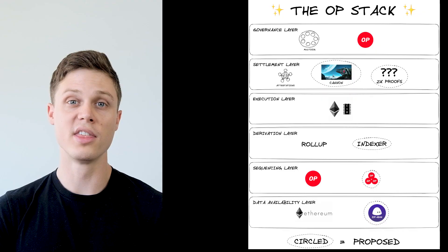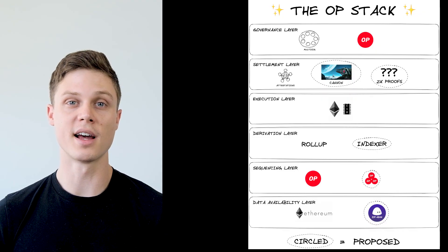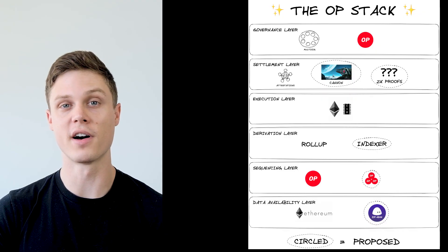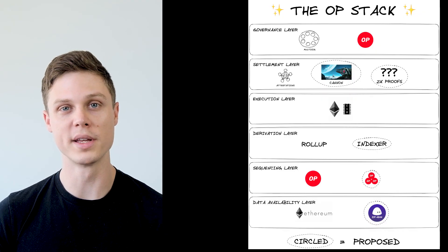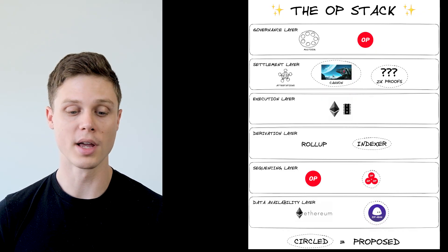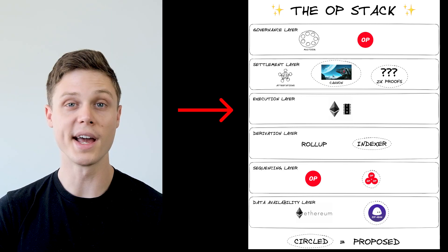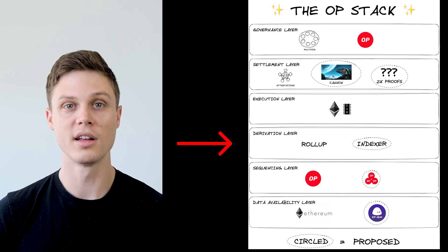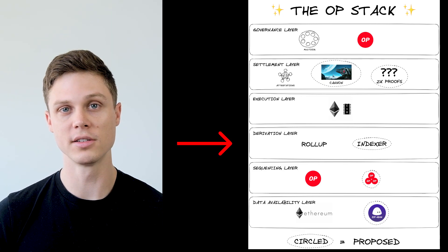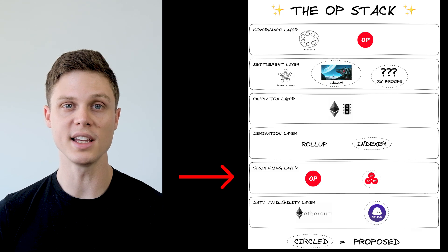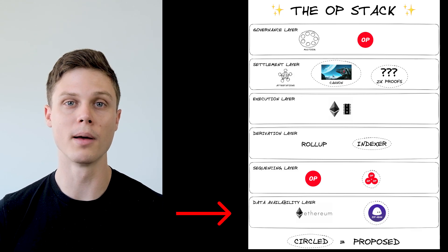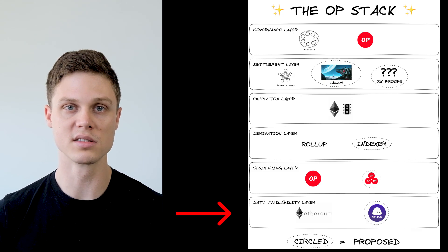So what are these actual layers and modules that we keep talking about? Let's dive a little bit further into them. The main layers that are currently defined in the OP stack from top to bottom are the governance, settlement, execution, derivation, sequencing, and data availability layers.